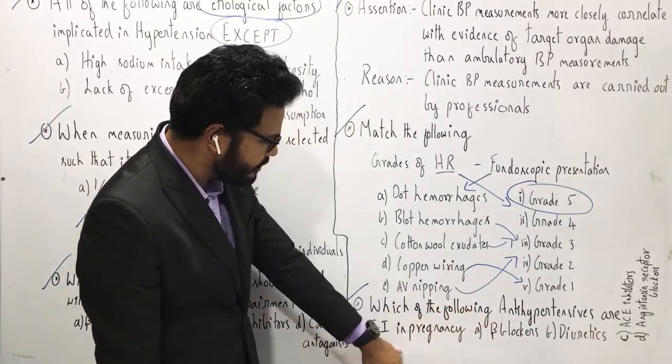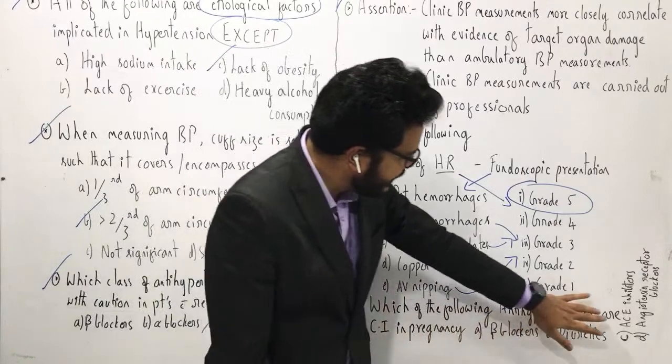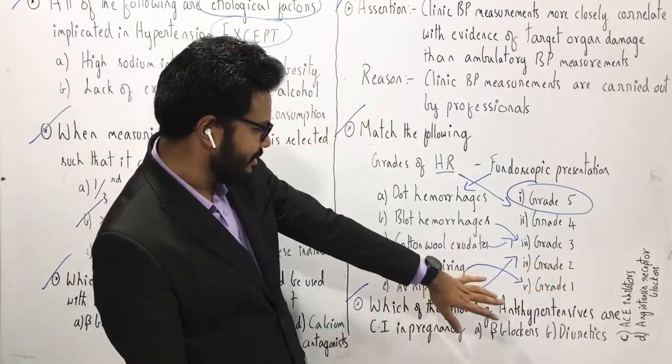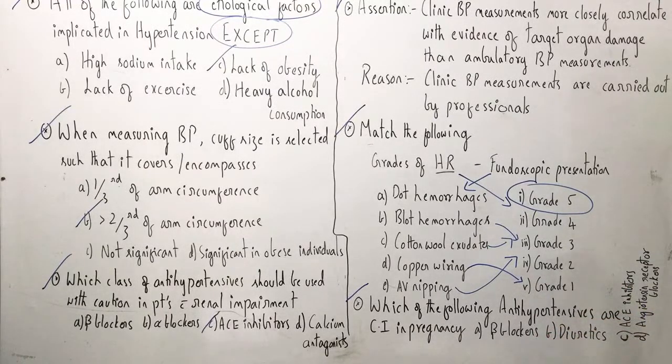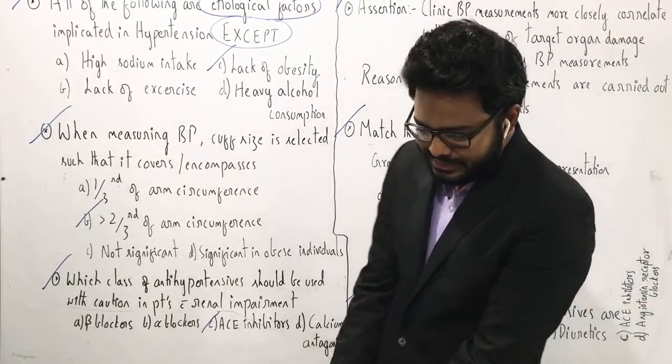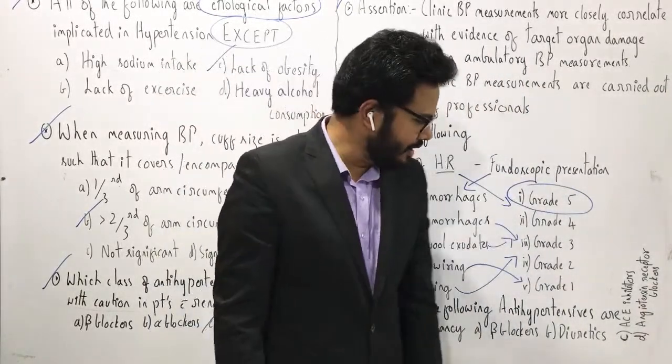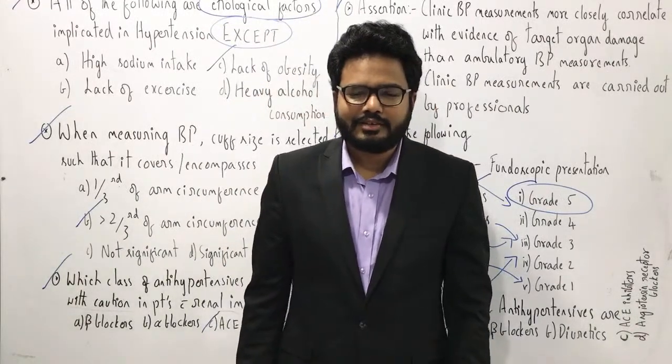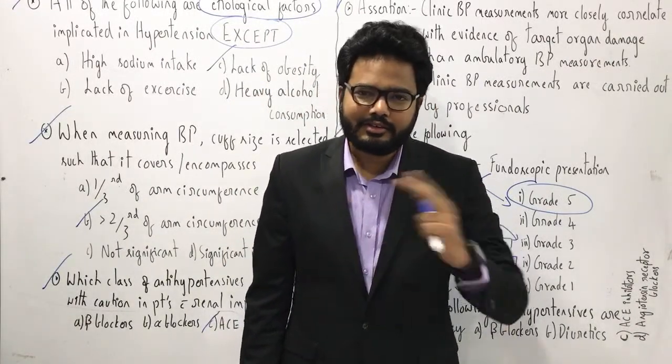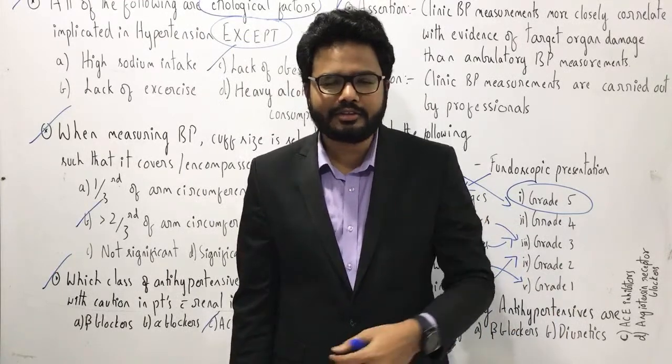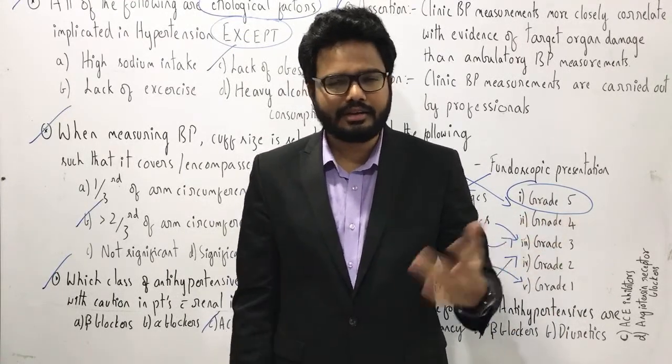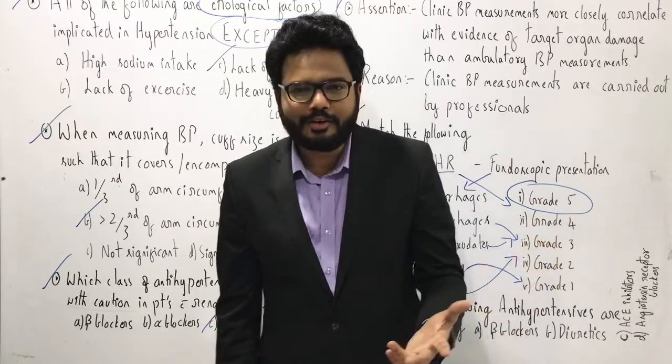Beta blockers, diuretics, ACE inhibitors, and angiotensin receptor blockers. Which one do you think are more appropriate? As you can see in the table which is presented in Davidson, ACE inhibitors as well as angiotensin receptor blockers, they are contraindicated in case of pregnancy. Teratogenic potential, we already discussed that in our e-classes.